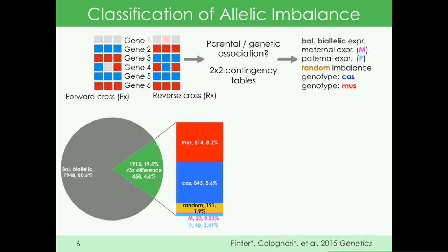To make a long story short, we find that in the mus-cast cross, about 80% of genes are expressed in balanced biallelic fashion. About 20% are imbalanced, and about a quarter of those are candidates to be monoallelic genes because they have more than three-fold difference between alleles. The vast majority of allelic imbalance was due to genotypic variation. We found about 60 imprinted genes and about 200 randomly imbalanced genes.